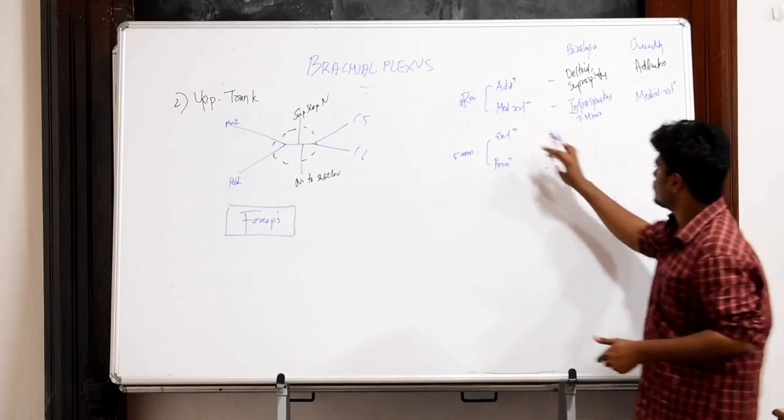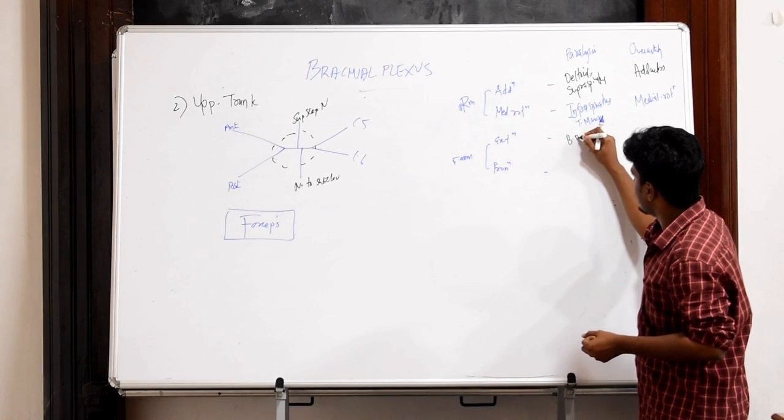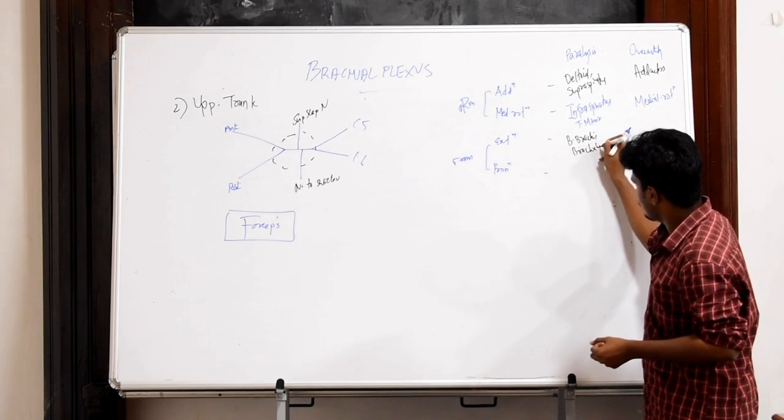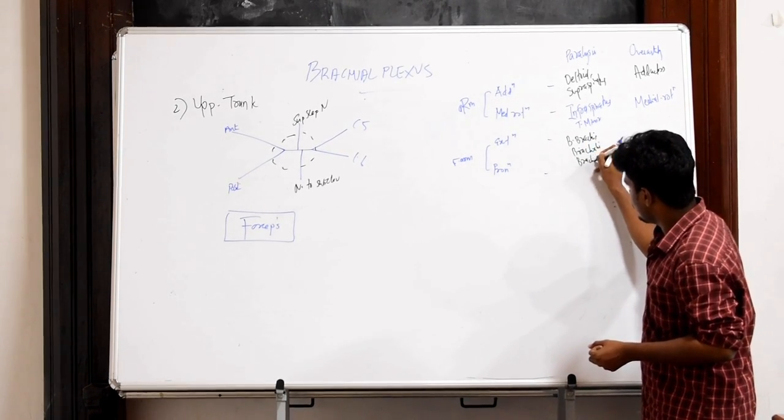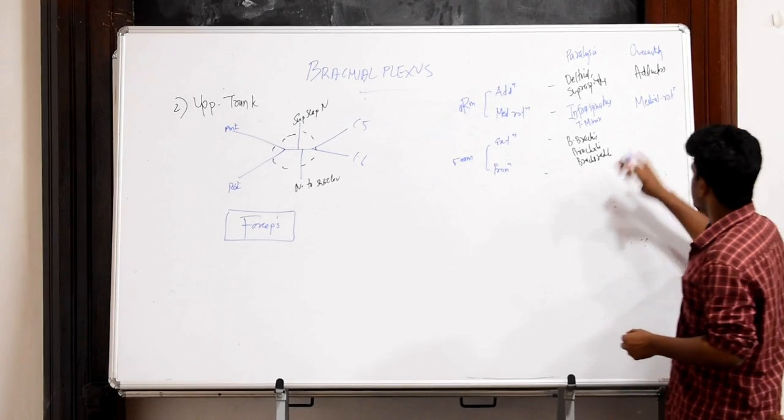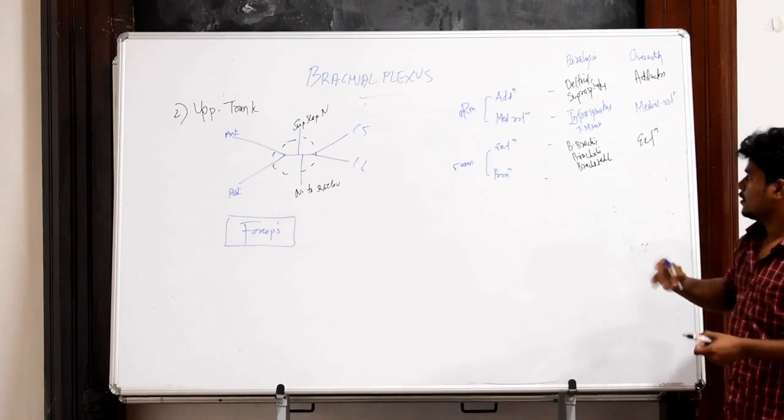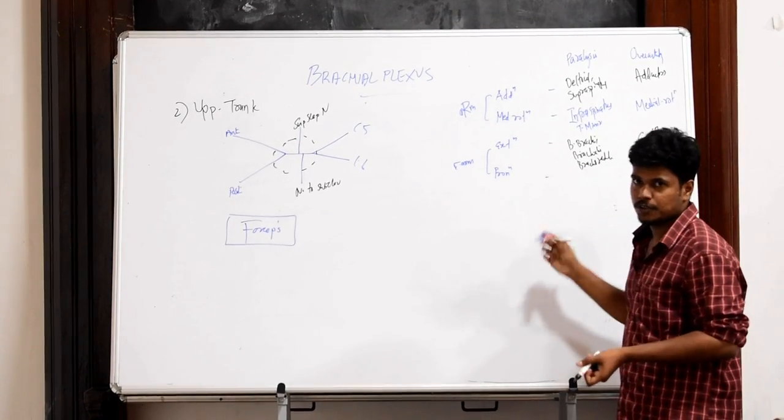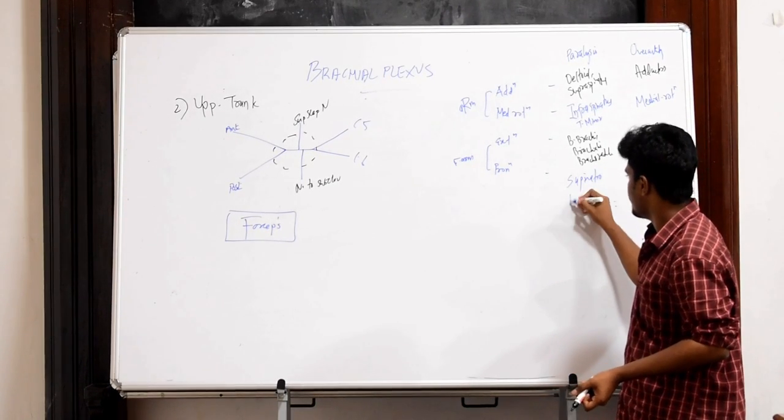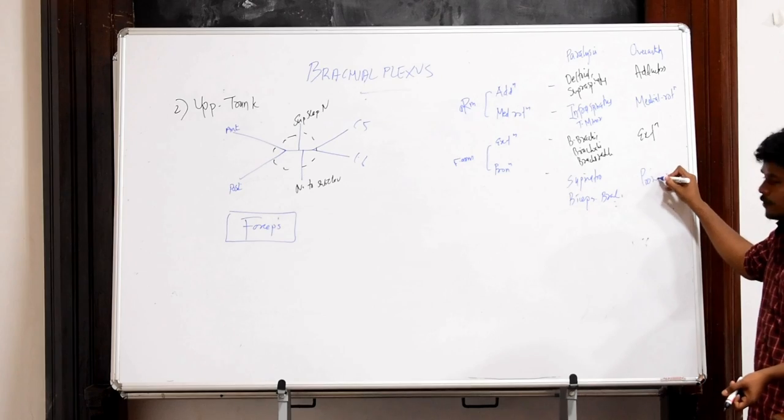Muscle causing extension is actually the paralysis of biceps, brachialis and brachioradialis and the over-activity of extensors of the upper limb. And the pronation is actually due to paralysis of supinator and biceps brachii and over-activity of pronators of the upper limb.